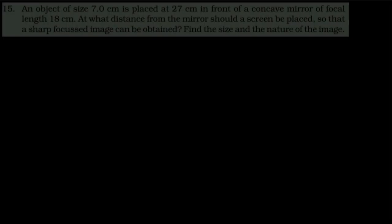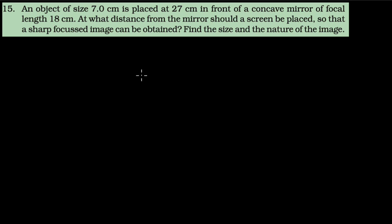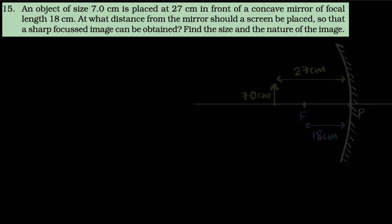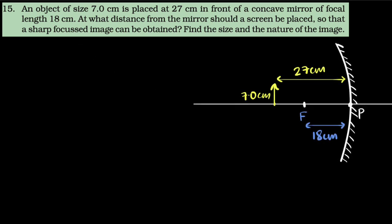Let's learn mirror formula, magnification formula, sign conventions, and solve this NCERT problem. We are given there is an object of height 7.0 centimeters kept 27 centimeters in front of a concave mirror of focal length 18 centimeters.